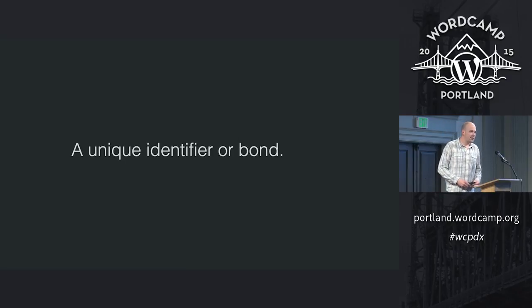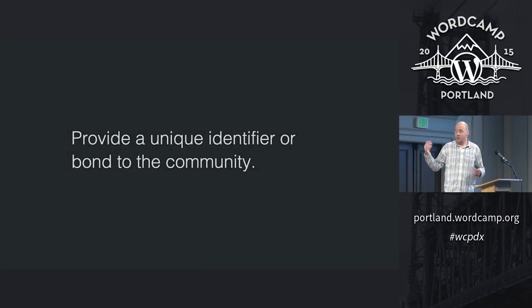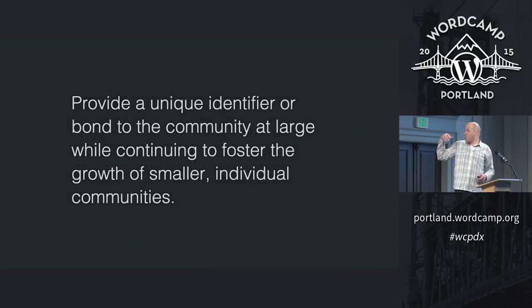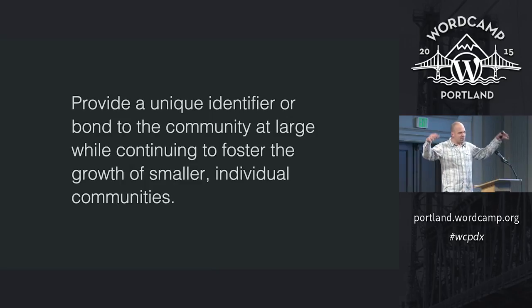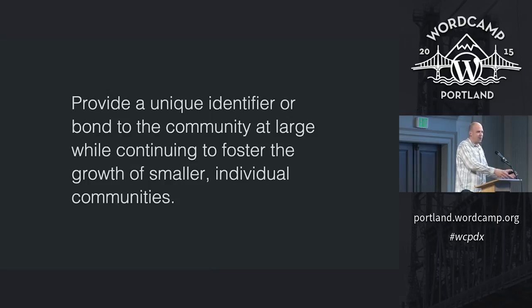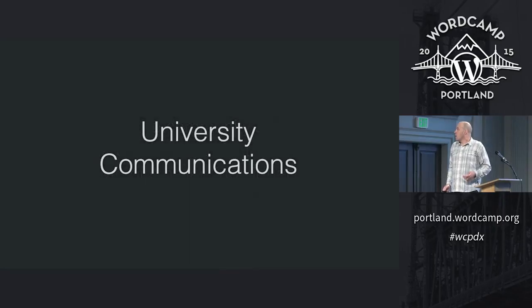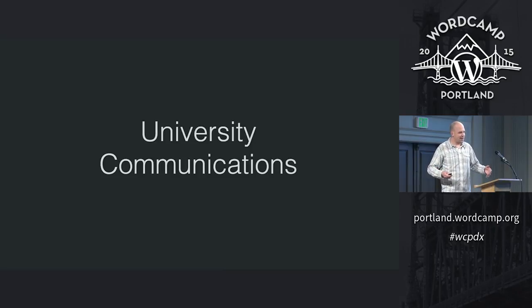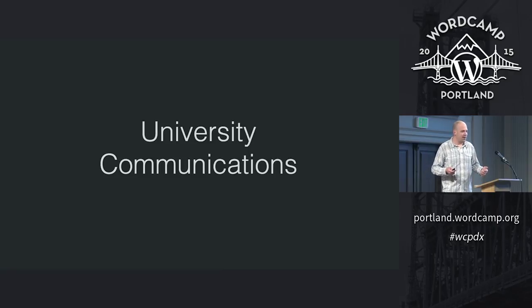To do that, we need to find a unique identifier — a bond that everybody has — the one thing that you want to work towards with everybody else. We want to provide this bond to the community at large, while also continuing to foster and encourage the growth of smaller communities. So while we want you to be WSU in everything that you do, we also realize it's very important that Murrell College of Communication is Murrell College of Communication.